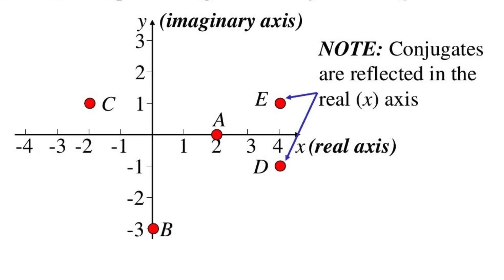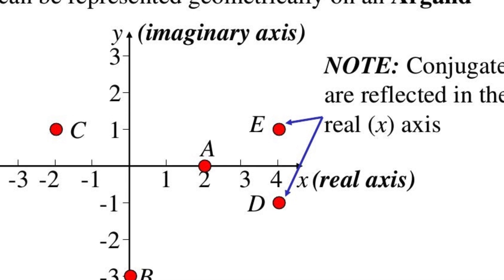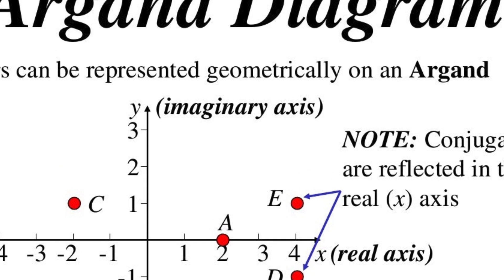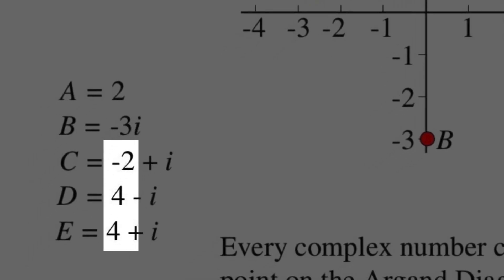The axis of real numbers is called the real axis. The other is called the imaginary axis. Every point on the Argand diagram which is not on an axis has a real part and an imaginary part. Such a number is called a complex number.